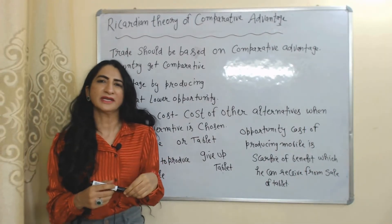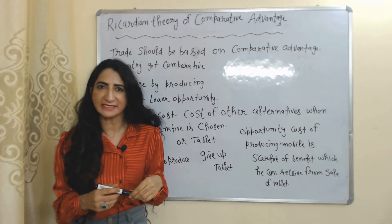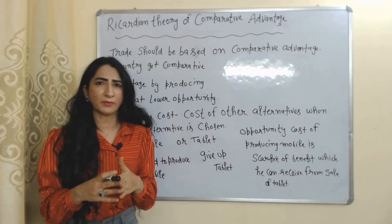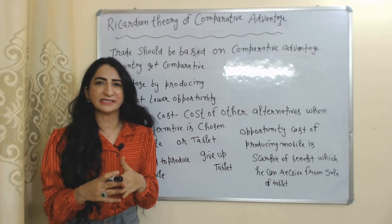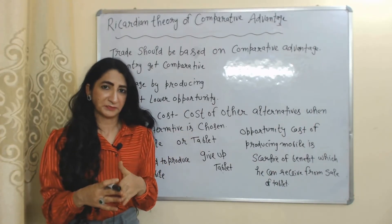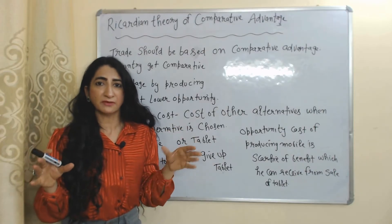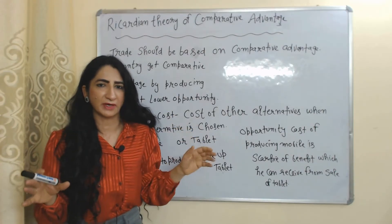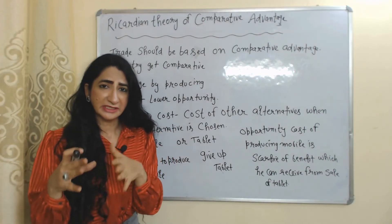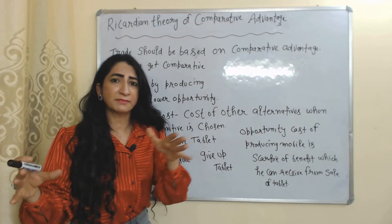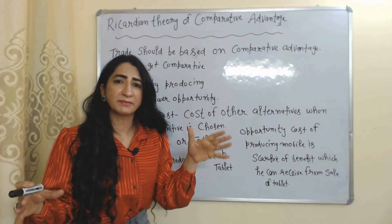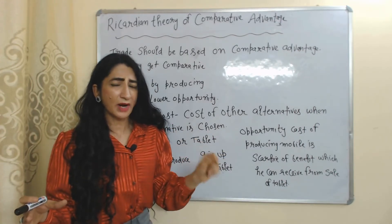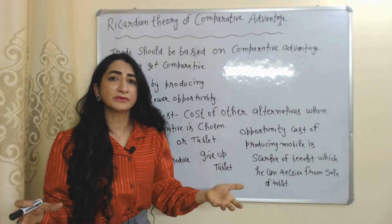Hello everyone, my name is Mini Sechi. I hope you all are staying healthy. Today we are going to talk about Ricardian theory of comparative advantage. According to this theory, we should do trade based on comparative advantage, and we can get comparative advantage by producing goods at lower opportunity cost.